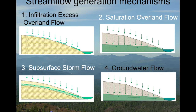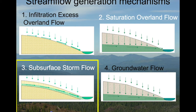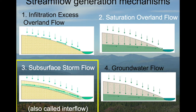We are talking about stream flow generation mechanisms — in other words, how does water that falls on the landscape of a watershed actually get to the stream? Today we are going to focus on subsurface storm flow. As the name implies, this is water that is able to infiltrate into the ground and then moves through the subsurface to the stream. Another term you may have heard for this phenomenon is interflow, which indicates it isn't quite normal groundwater flow but is occurring in the subsurface.